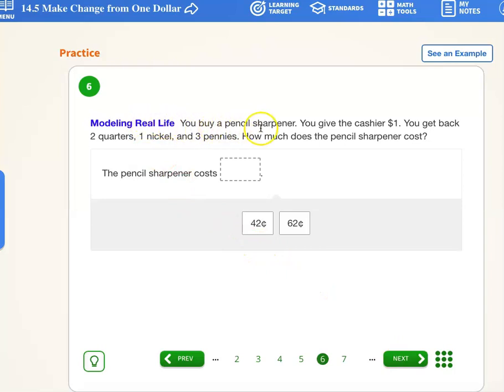Let's see. You buy a pencil sharpener. You give the cashier $1. You get back two quarters, one nickel and three pennies. How much does the pencil sharpener cost? This is a pretty big deal problem. Lots of steps to it. Let's figure it out. You buy a pencil sharpener. You give cashier $1. Alright. So we started with $1, right?